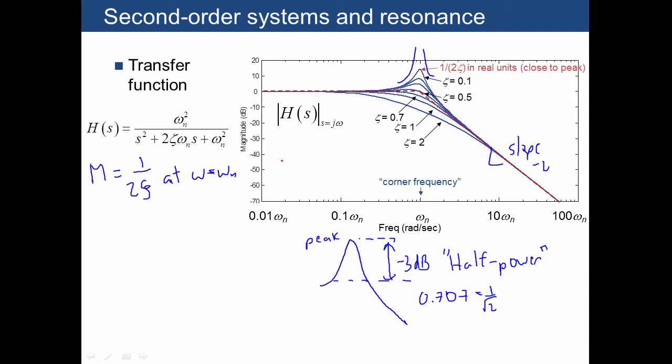If this were the output, say a voltage, then the power is related to the voltage by v squared over r. In other words, you usually have to square whatever the output amplitude is in order to find the power. So if we go minus 3 dB down from the peak, that's also half power.